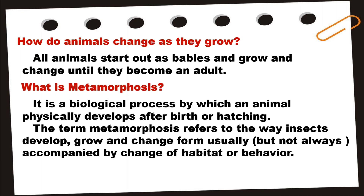There are two types of metamorphosis: complete or incomplete metamorphosis. Complete metamorphosis refers to a type of insect development whose egg, larva, pupa, and adult stages differ greatly in morphology. It consists of four stages: the egg, larva, pupa, and adult.